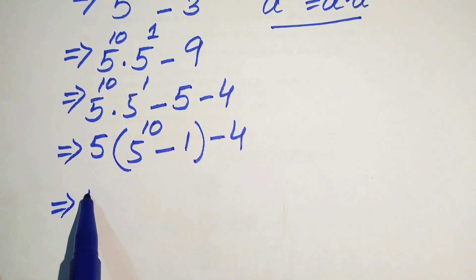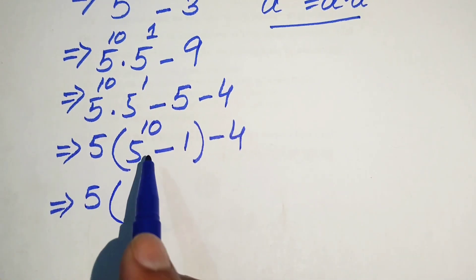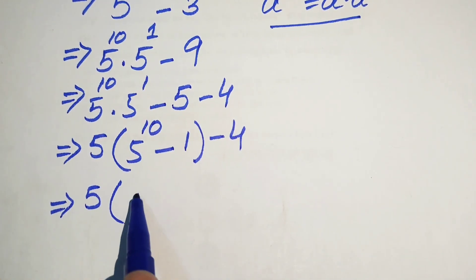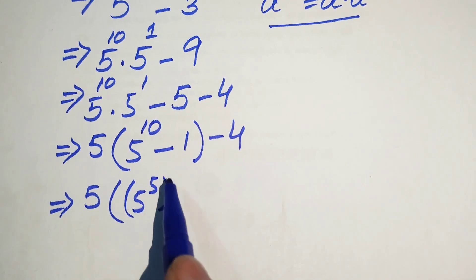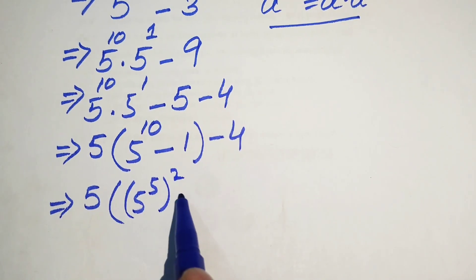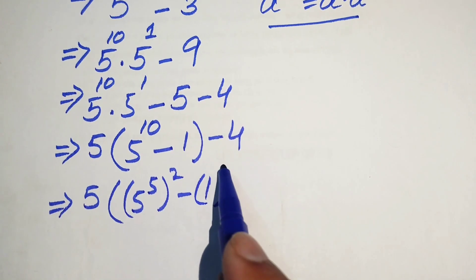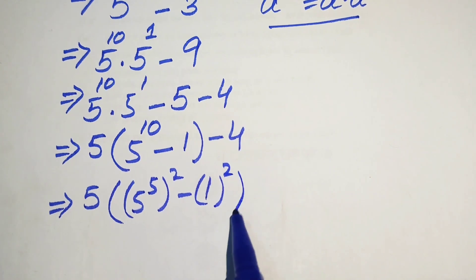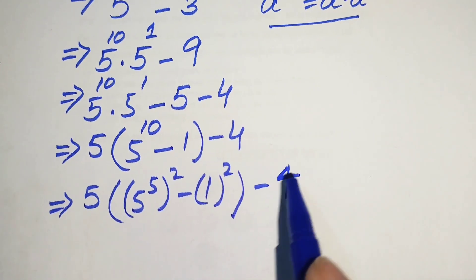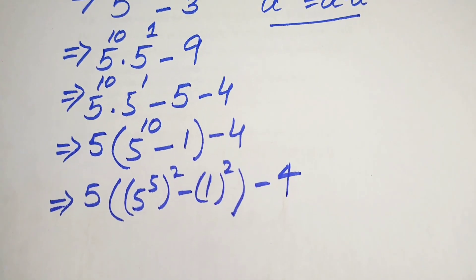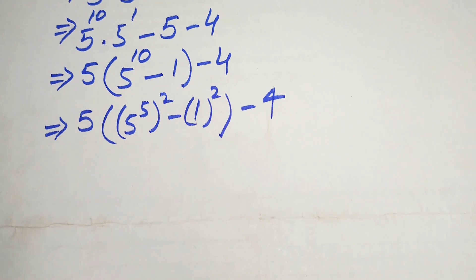Now we focus on 5 to the power of 10 and rewrite it as 5 to the power of 5, whole squared. So we have 5 into the quantity 5 to the power of 5 squared, minus 1 squared, minus 4.